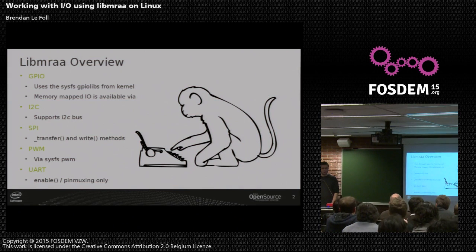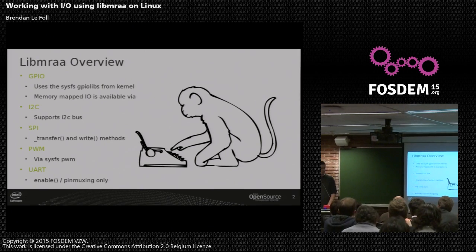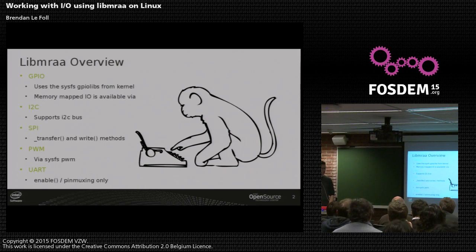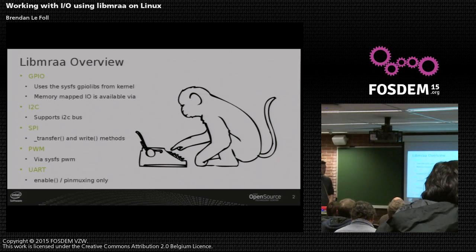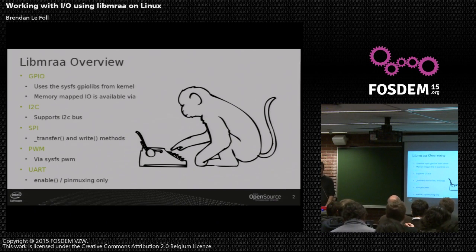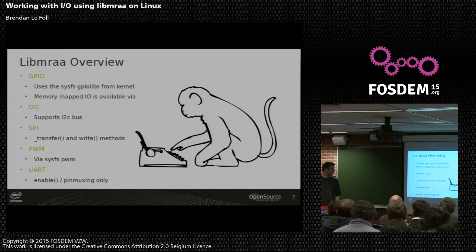MRAA is an IO library for user space Linux, with the intention to support as many boards as possible. It lets you do the typical stuff you'd expect: GPIO, using GPIO libs, or any kind of weird methodology that your board uses. We basically have a bunch of hooks that let you do weird stuff. We support I2C, SPI, PWM, and UART enabling.